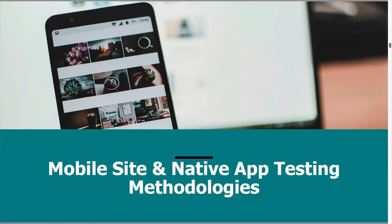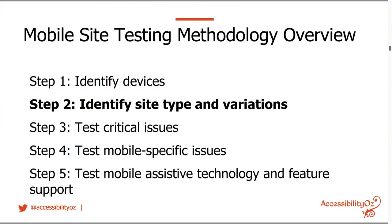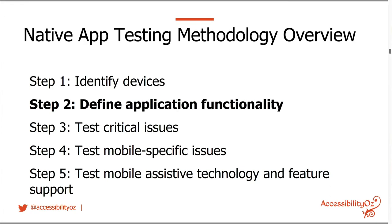The five steps. The mobile site methodology is very similar to the native app methodology — the only steps that are different are step two. Step one: identify devices. Step two: identify site type and variations for the mobile site. Step three: test critical issues. Step four: test mobile specific issues. Step five: test mobile assistive technology and feature support. For a native app, the difference in step two is where you need to define the application functionality.